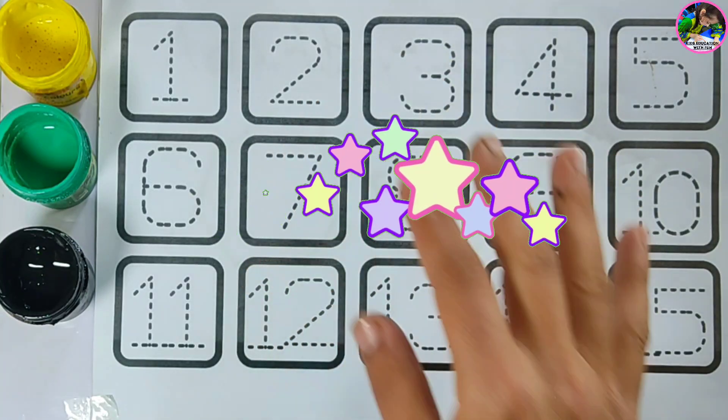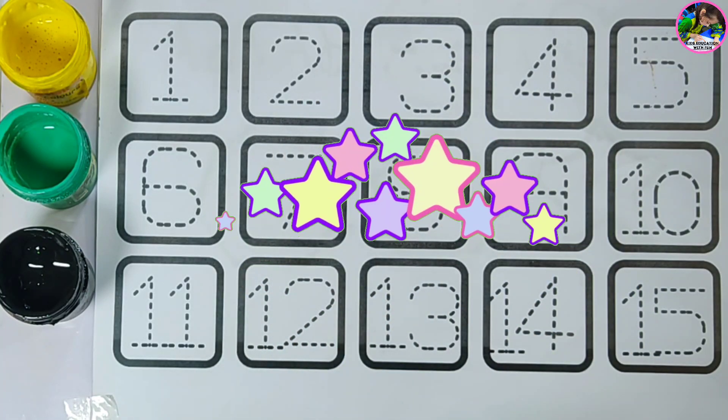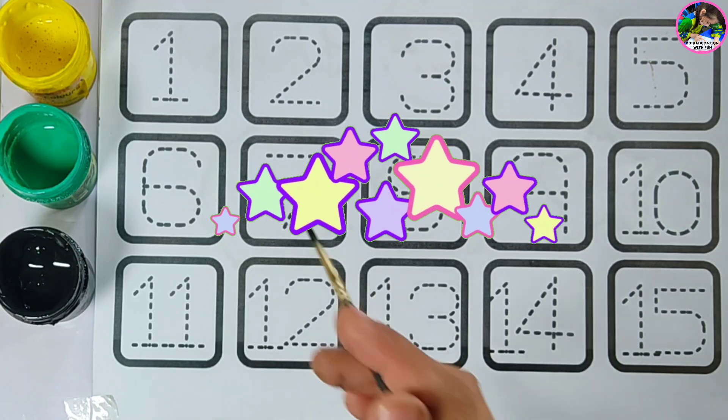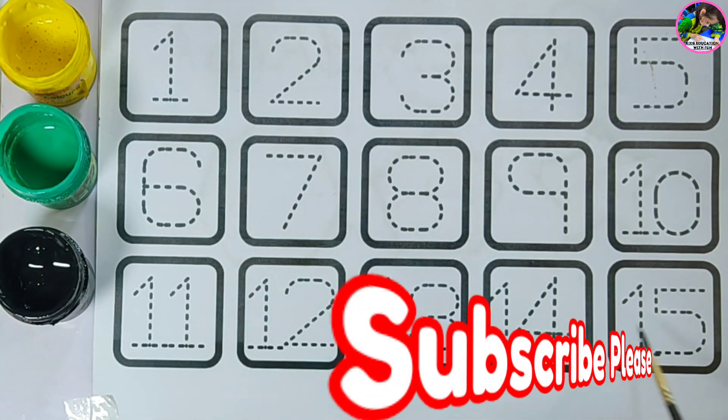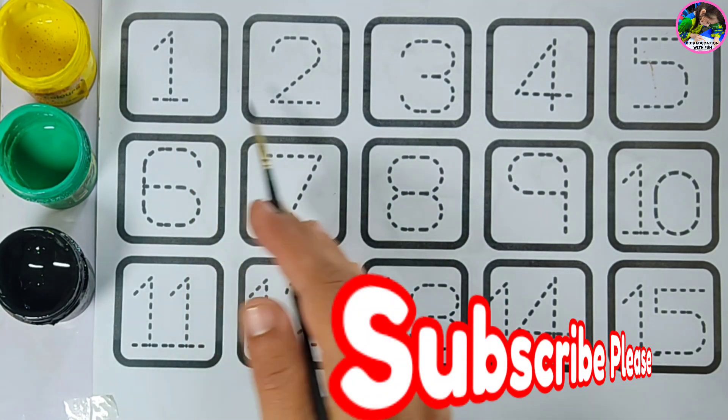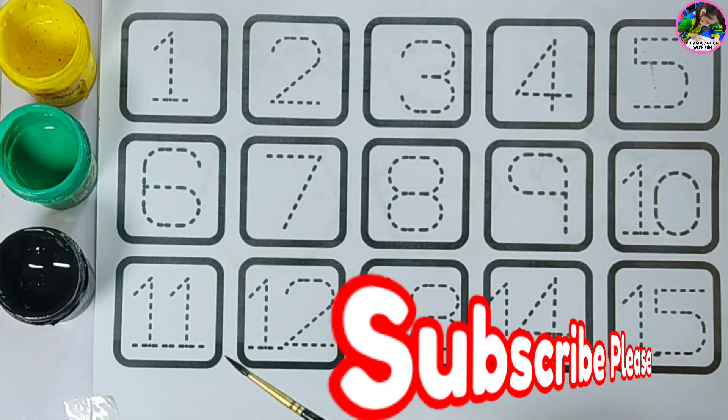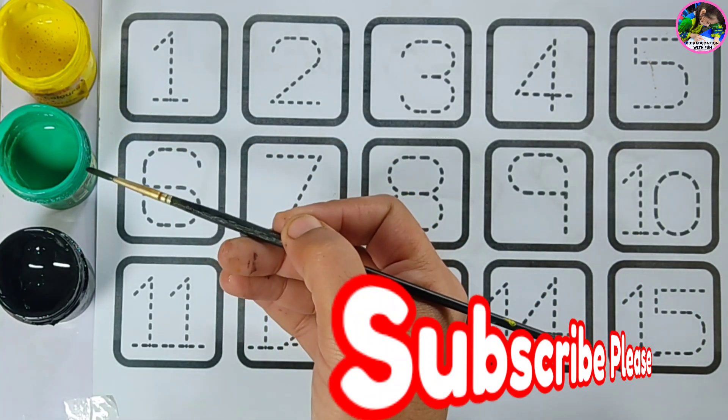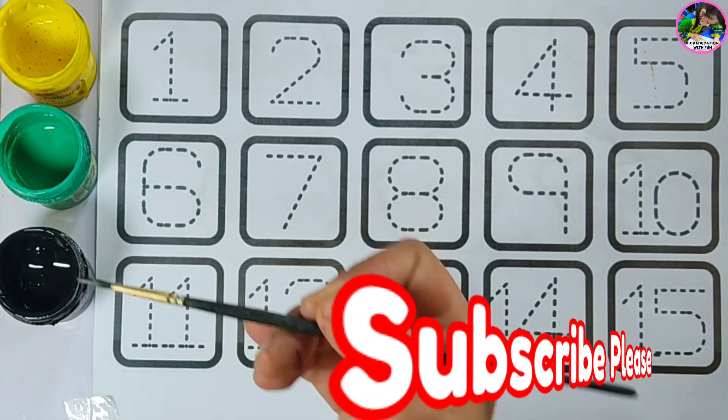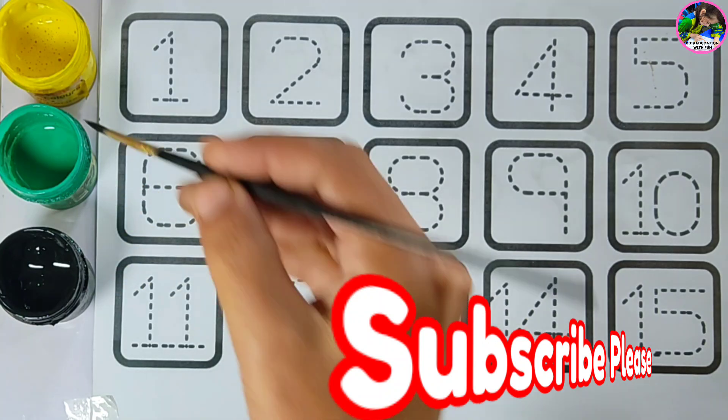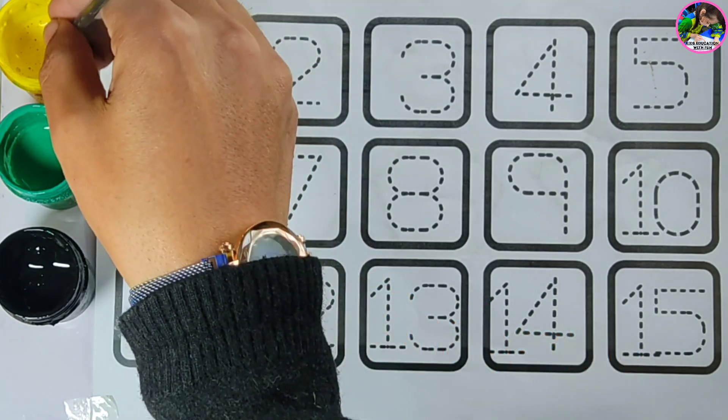Hello kids, welcome to Kids Education with Fun. In this video we are practicing numbers from 1 to 15. You need this worksheet and some colors. We have yellow color, dark green color, black color. Let's start.